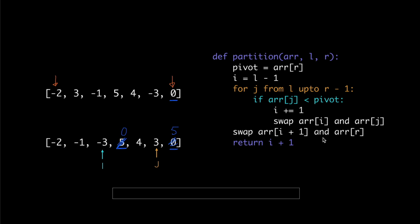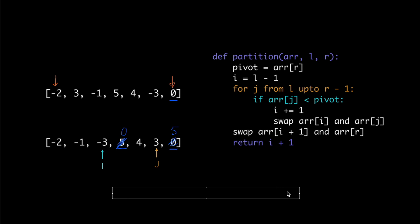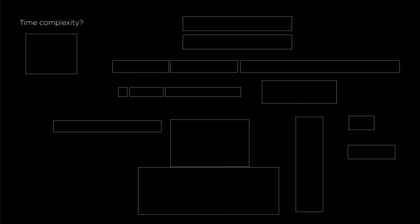Okay, so that's the pseudocode. You can check the actual implementation in Python and Java at the URL in the description. Now, what about the time complexity? To understand this, we need to consider the best case, the worst case, and the average case. Let's start with the worst case.